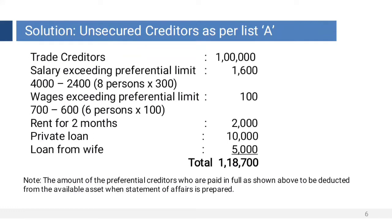Regarding the loan from wife: if the wife has given the loan to her husband out of her personal property, dowry, self-earned income, or out of funds received from her parents, then the amount of loan is included in creditors. On the contrary, if the wife's loan is out of money given to her by her husband, then the loan is taken as capital or investment.